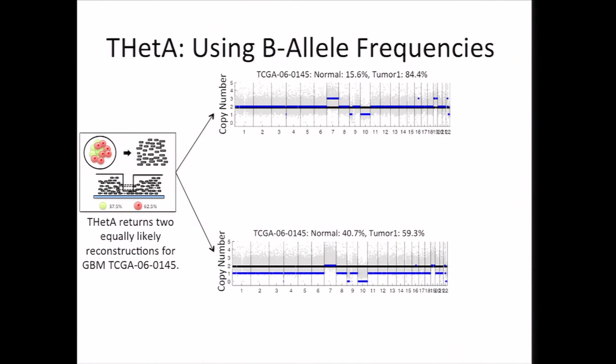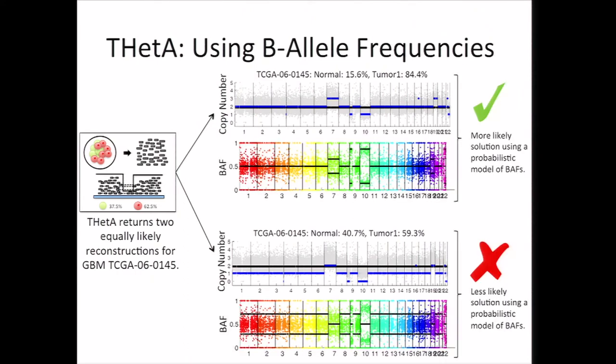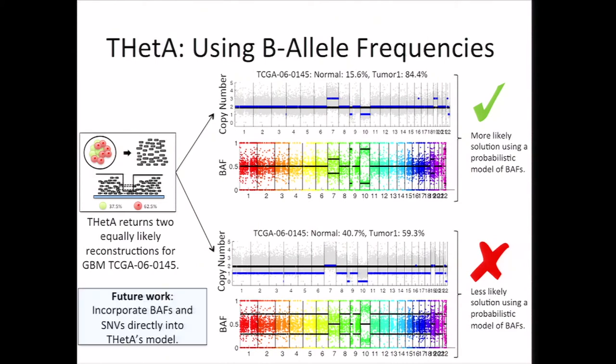We're also working on incorporating B allele frequencies into the model. I briefly mentioned there's an identifiability issue, and THetA might actually return two equally likely reconstructions when it uses just read depth information. This is an example of a glioblastoma genome where that happened. We've devised a probabilistic model which uses the reconstructions output by THetA in order to model the B allele frequencies, which we can then use to select the most likely solution. In this case, we end up selecting the solution that is mostly diploid, where we see some characteristic rearrangements from glioblastoma, like an amplification of chromosome 7 or deletion of chromosome 10. Going forward, we want to directly incorporate B allele frequencies and SNVs directly into the THetA model.